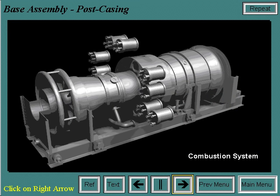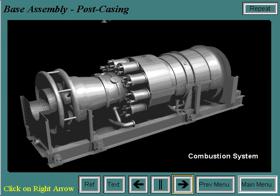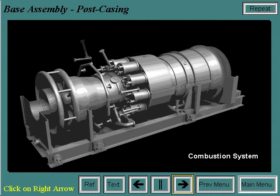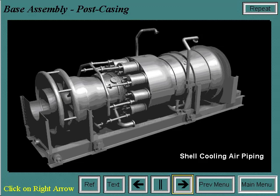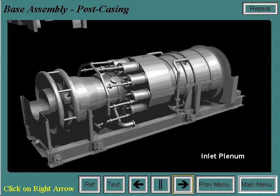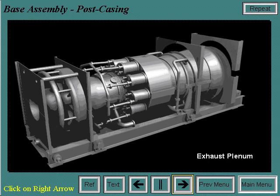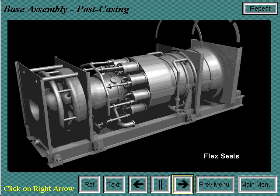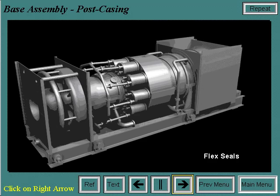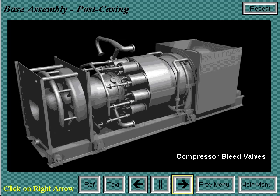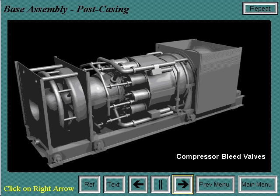Once the casings are on, the combustion system is installed. Next, the shell cooling air piping is installed. Air comes from off-base blowers to facilitate shell cooling in the turbine and exhaust casings. Then the inlet plenum is installed, followed by the exhaust plenum. The flex seals keep the exhaust gases from escaping into the turbine compartment or out to atmosphere while allowing for thermal expansion. Finally, the compressor bleed valves are installed, which are operational during startup and shutdown to protect the unit from surge.